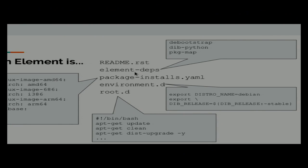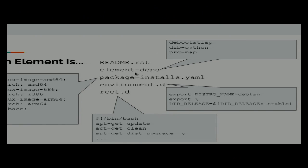There are about six or seven stages during the build process — for example: prepare, install, bootloader install, cleanup, and so on. Each stage maps to a separate directory, and scripts in those directories are executed at the appropriate stage. For example, in the environment stage you can set names that are picked up by other elements. This is really where all the work happens.